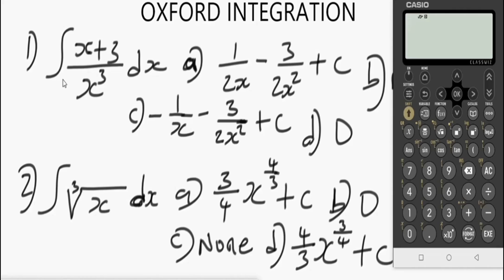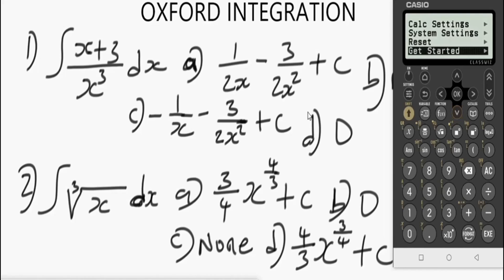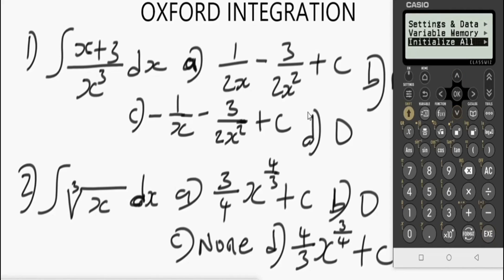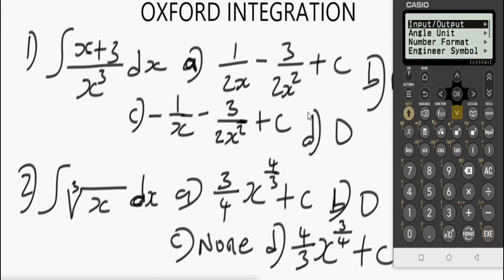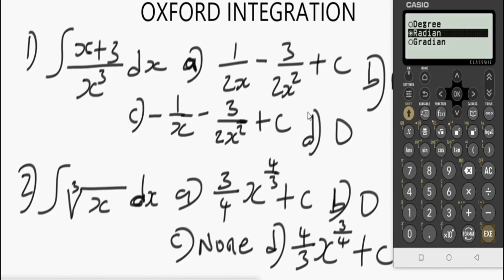The question says: find the indefinite integral of (x + 3) over x³ dx. Here are the options. The very first thing to do, as usual, is to reset the calculator to put it in default mode. Press the setting button, navigate to reset, press execute, then initialize. The essence of resetting is to put the calculator in default mode. Press execute again — it's now reset. Next, ensure the calculator is in radian mode: press the setting button, under calculator setting press execute, then angle unit, press execute, navigate to radian, press execute. It's now in radian. Press AC.